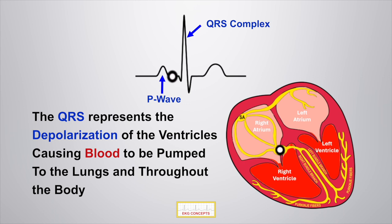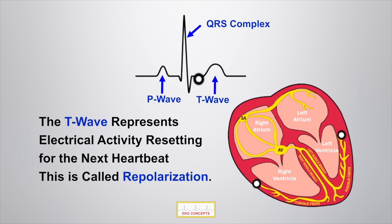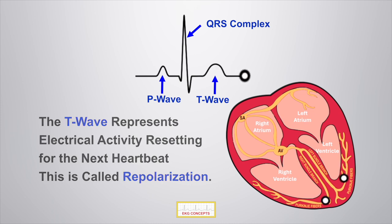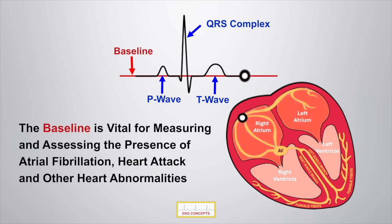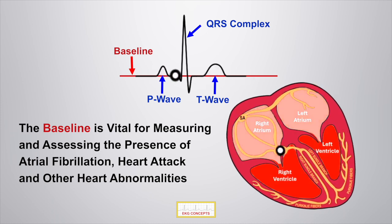The QRS complex represents depolarization of the ventricles. Depolarization is a process by which the heart muscle contracts, causing blood to be pumped to the lungs and then throughout the body. The T wave represents electrical activity resetting for the next heartbeat — this is called repolarization. The baseline serves as a reference point for measuring and assessing the presence of atrial fibrillation, heart attack, and other heart abnormalities.